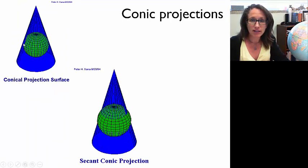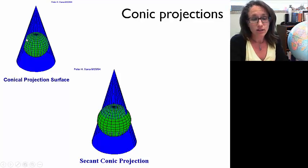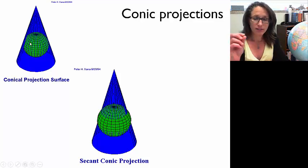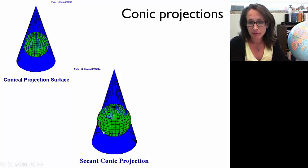We can take a conic projection, and in this case, our line of tangency would be along a parallel in the mid-latitudes in the northern hemisphere. Conic projections are often used to project maps of North America because the line of tangency is a parallel in the mid-latitudes, which works really well across North America. A secant conic projection actually intersects the globe and again makes a region of minimized distortion.